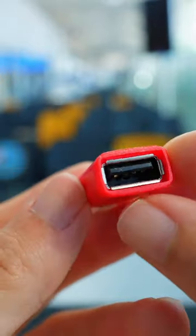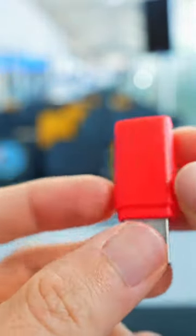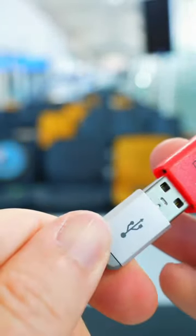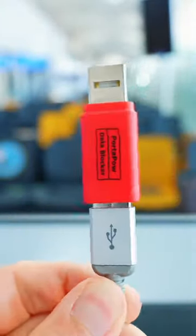These little port-a-pow things. What these do is they block data from going through a power port. So if you don't trust the USB port, like at an airport, it's a great place to not trust where you're plugging in your phone to make sure that there's no data transferred.